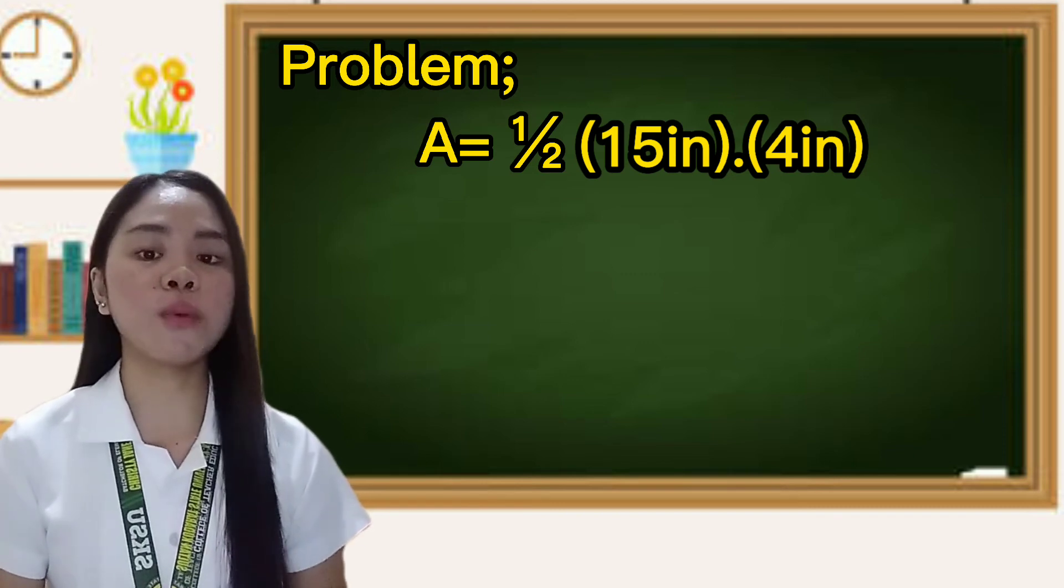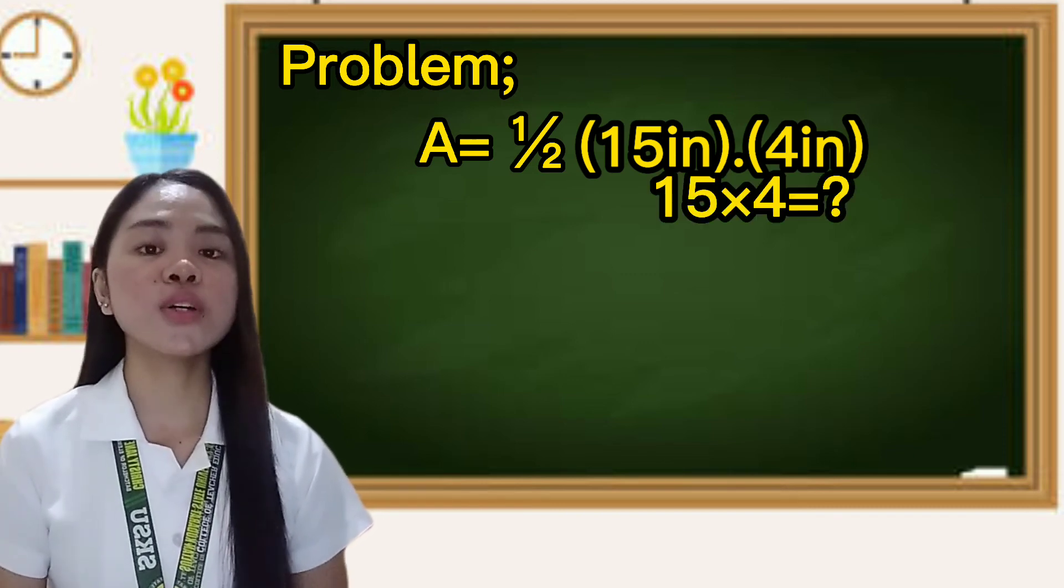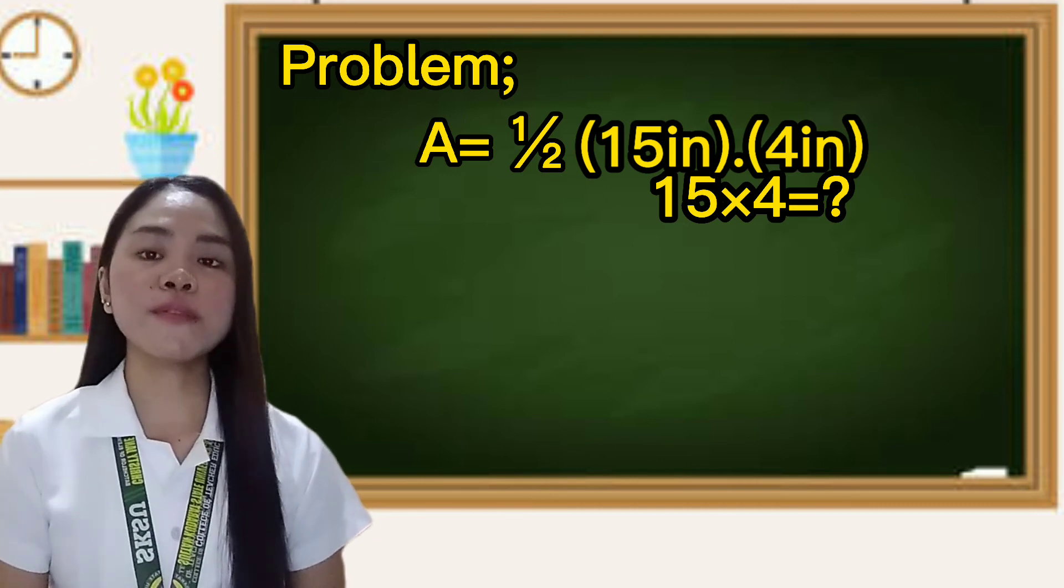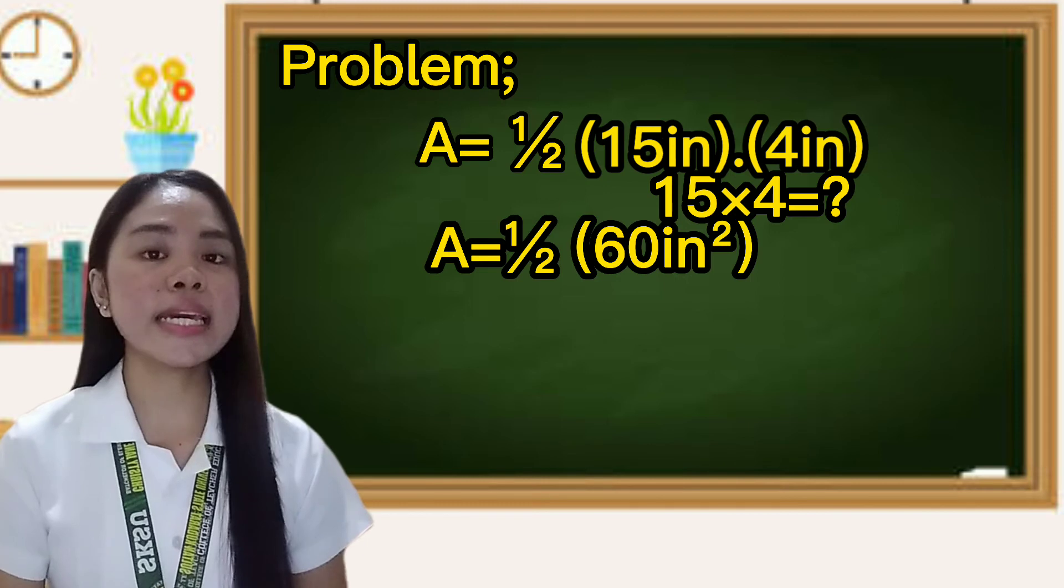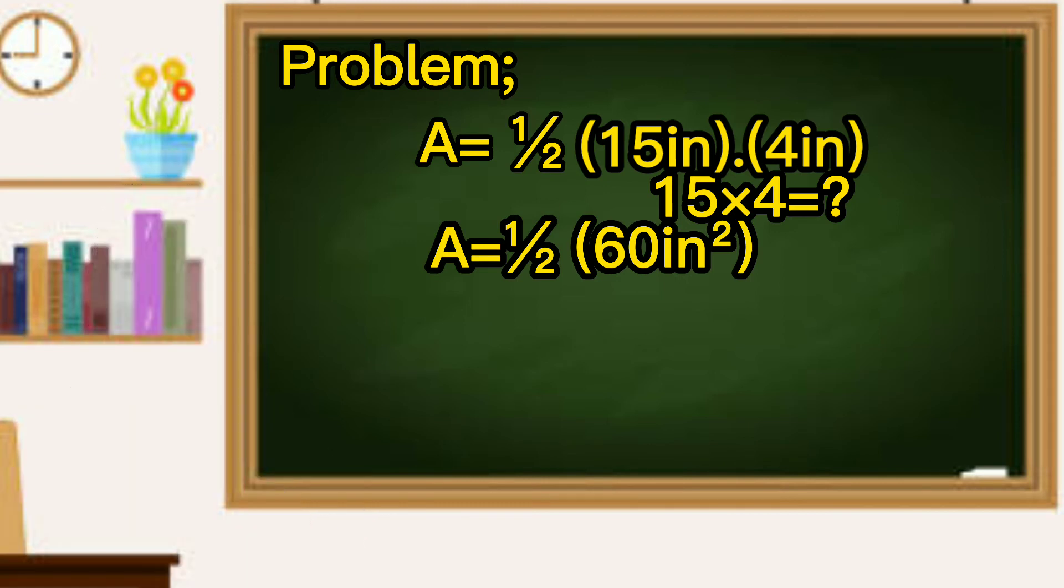First, we have to multiply fifteen inches by four inches. So, fifteen inches times four inches equals sixty inches squared.